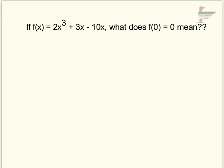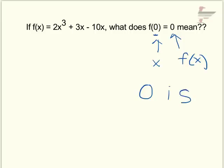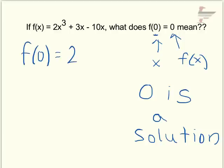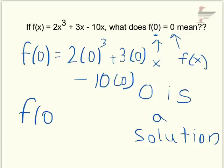Last concept: if f(x) equals 2x cubed plus 3x minus 10x and f(0) equals 0, what does that mean? It means if you plug in zero for x, f of x equals zero. That tells you zero is a solution — if you evaluate f at any value and get zero, there's no remainder, so that value is a solution. You can verify: plug in zero and all terms become zero, confirming f(0) equals zero. So if f of something equals zero, that x-value is a solution.